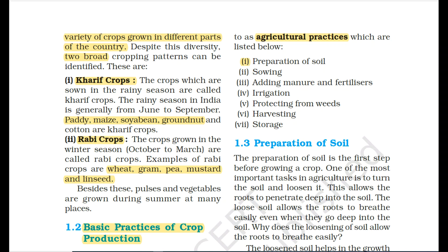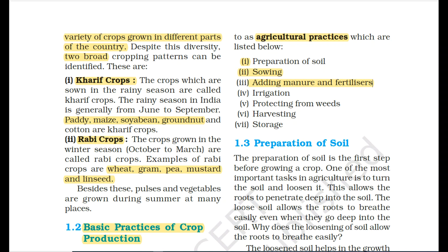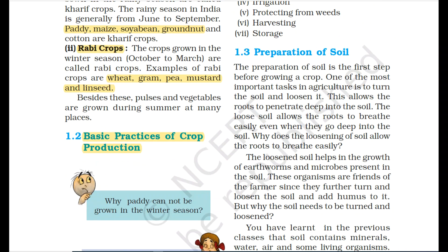Similarly, crop production also has a proper process. First is preparation of soil, then sowing, then adding manure and fertilizers so the crops grow better and healthy, then irrigation, then protection from weeds so the crop is not wasted, then harvesting — cutting the crop — and finally storage, where you keep and maintain and manage it. This is the complete process that a farmer applies in crop production.